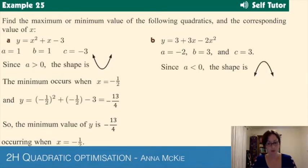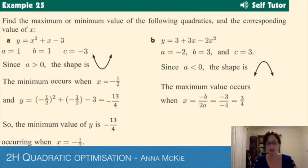The shape of this one - our a value is negative, so we've got a sad face, a concave down shape. Therefore, are we going to have a maximum or minimum? A maximum. And when does that occur? When x = -b/2a. You substitute those numbers in and it occurs when x = 3/4.